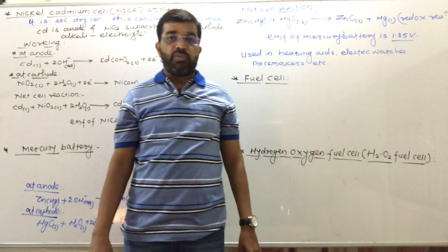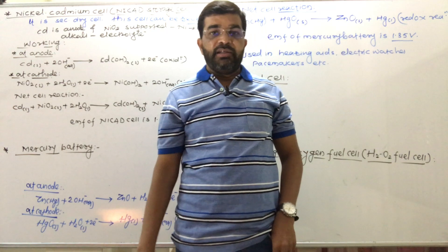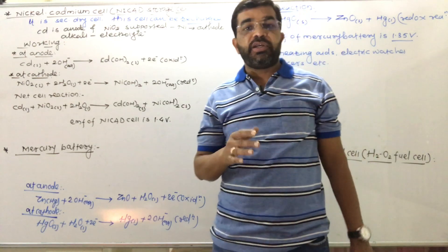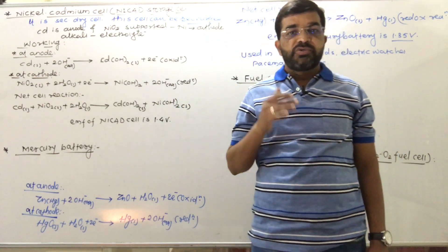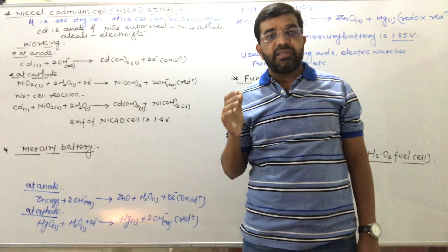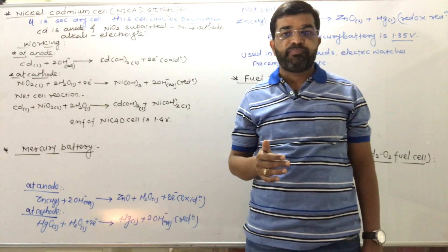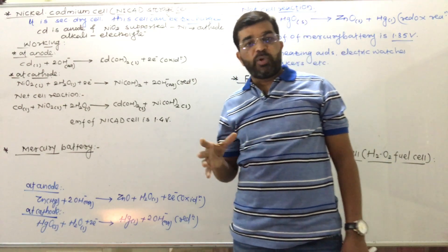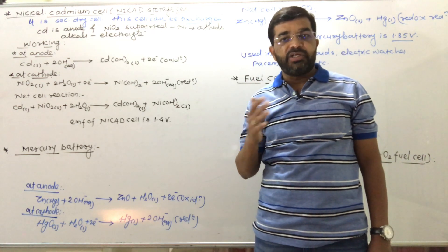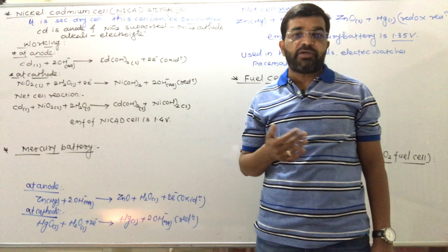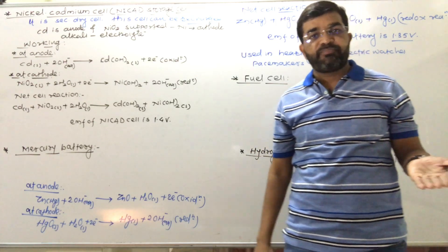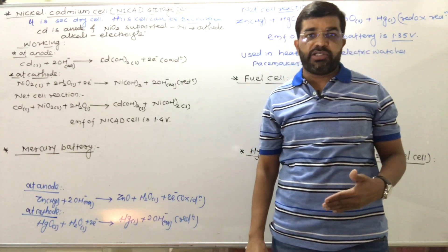In the last lecture about the dry cell and lead storage battery or lead accumulator, we studied that the lead storage battery is a secondary reversible galvanic cell, while the dry cell is a primary irreversible galvanic cell. We also studied the construction and working of the dry cell, the reactions taking place during working in the lead accumulator, and how it works during discharging and charging.